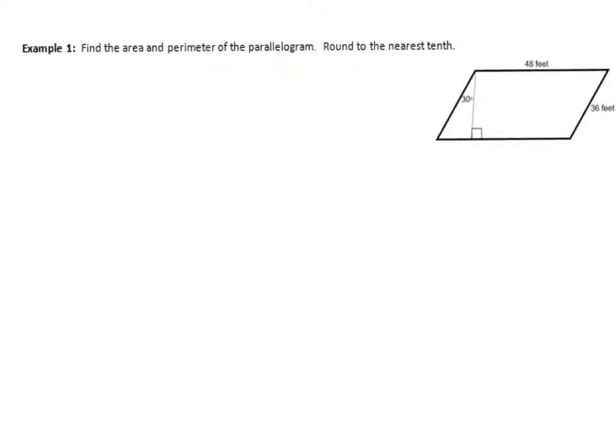All right, get to some examples. This first example is find the area and the perimeter. And it tells you what shape it is. It tells you that it is a parallelogram. So I'm going to begin with perimeter because that's pretty easy for this shape. The perimeter is just all sides. And since it's a parallelogram, the top and the bottom are the same. So it's 48 plus 48. And then the right and the left sides are both 36 plus 36. So perimeter in this case, and it's not always the case, but in this case, it's pretty easy. It's 168 feet.